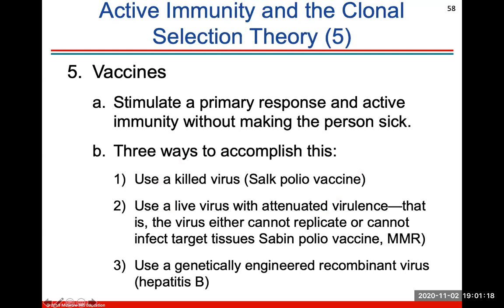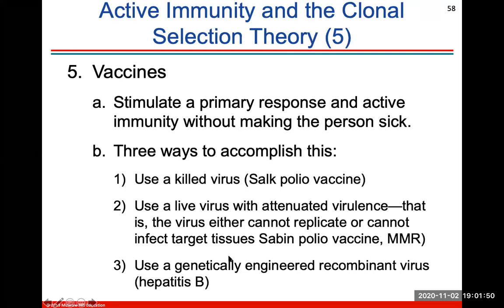Vaccines will stimulate a primary response and active immunity without actually making a person sick. There are three ways to accomplish this: they use a killed virus, like the Salk polio vaccine; they use a live virus with attenuated virulence that cannot replicate or infect tissues, like the Sabin polio vaccine or the MMR; or they use a genetically engineered recombinant virus like hepatitis B. These vaccines are active immunity given without making the person sick, using killed, attenuated, or genetically engineered viruses.